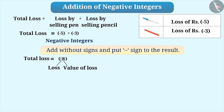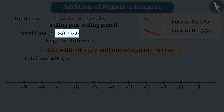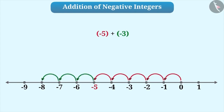Here, the minus sign represents loss and the number represents the value of loss. Therefore, we can say that the shopkeeper faces a total loss of Rs.8. The addition of negative integers can also be represented on the number line. We will understand this with the example of minus 5 plus minus 3. First, draw a number line of integers. Here, minus 5 is the first integer which is a negative integer. Therefore, we move 5 places to the left of 0 and by doing so, we reach minus 5. Now the second integer is minus 3. Since it is a negative integer, we move 3 places to the left of minus 5 and we reach minus 8, which is the result of minus 5 plus minus 3.